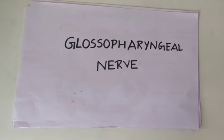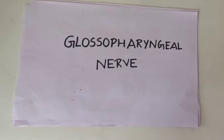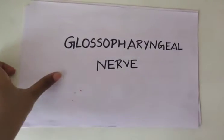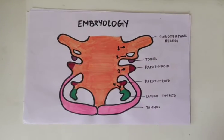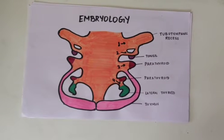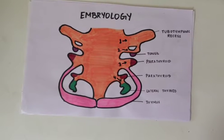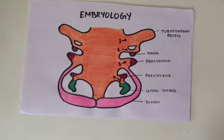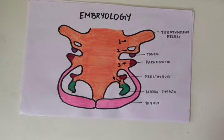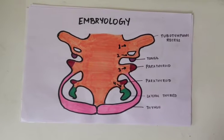Hello friends, today we will be dealing with the glossopharyngeal nerve. It is the 9th cranial nerve and one of the important nerves that can be asked as a short note or in detail in your exams. Now let's see the embryology associated with the glossopharyngeal nerve. Many people might skip embryology, but this is an important clue to remember the course, relations, and the muscles or glands supplied by the nerve.